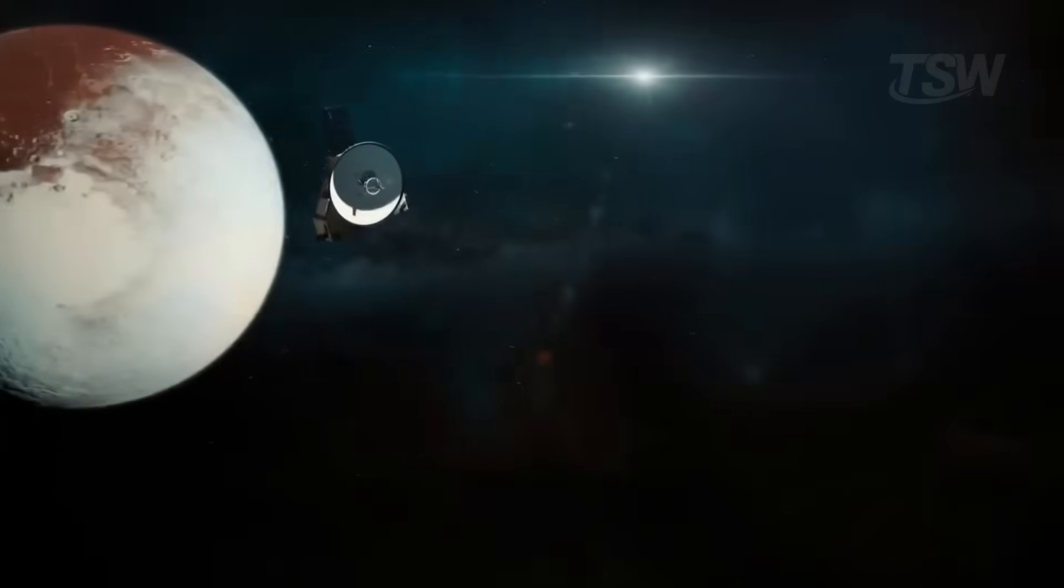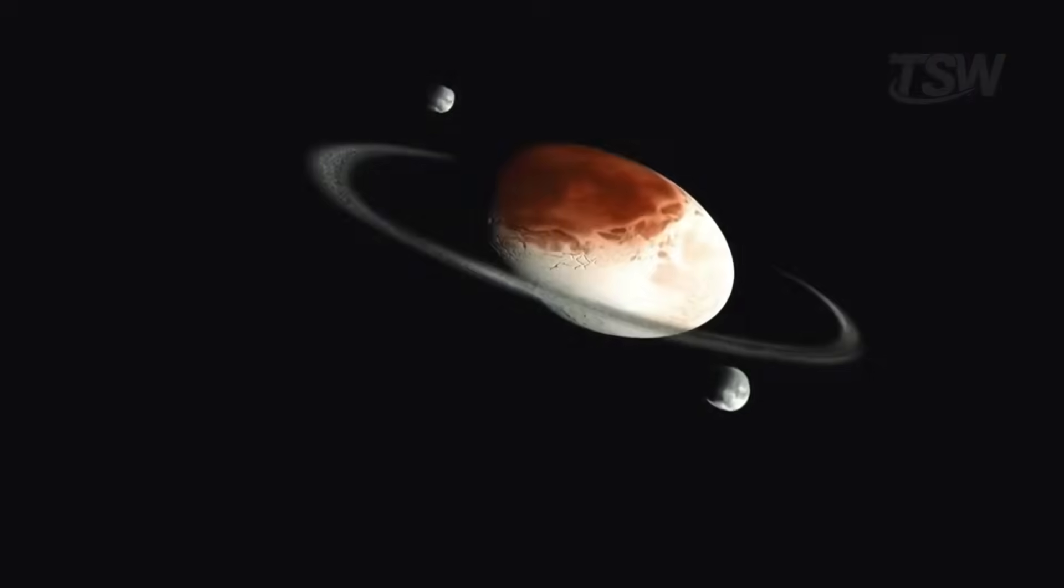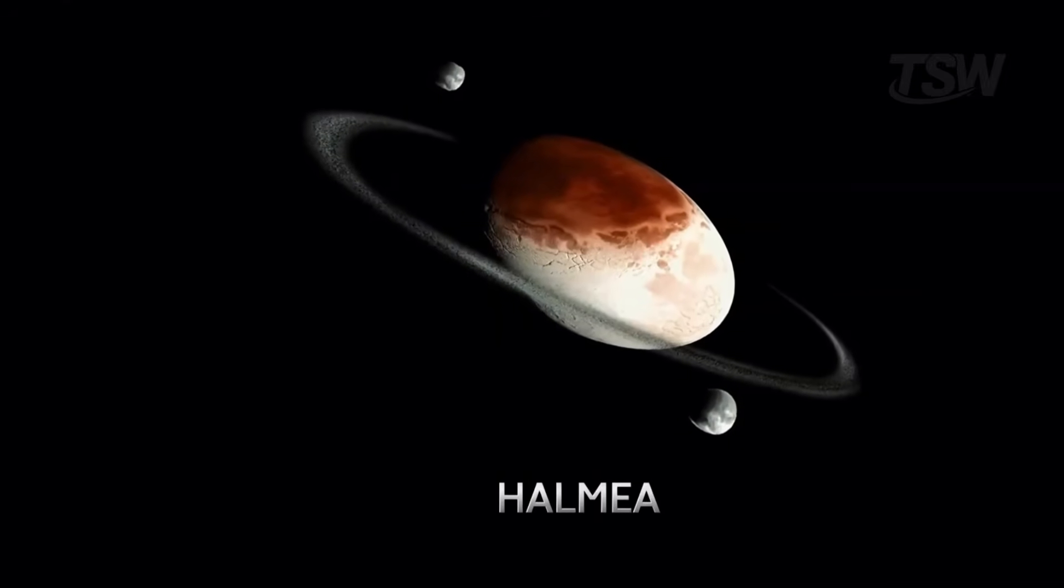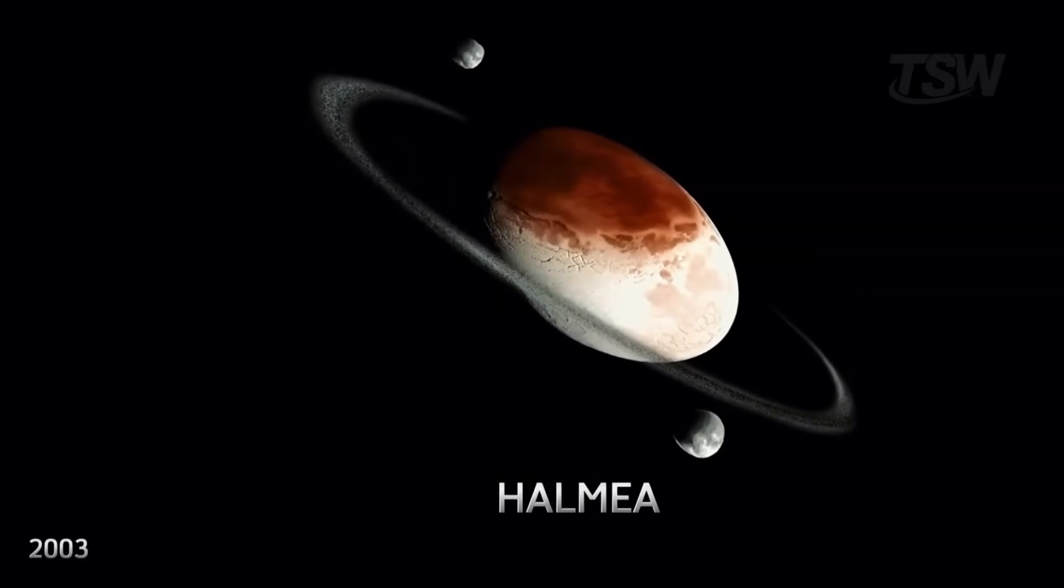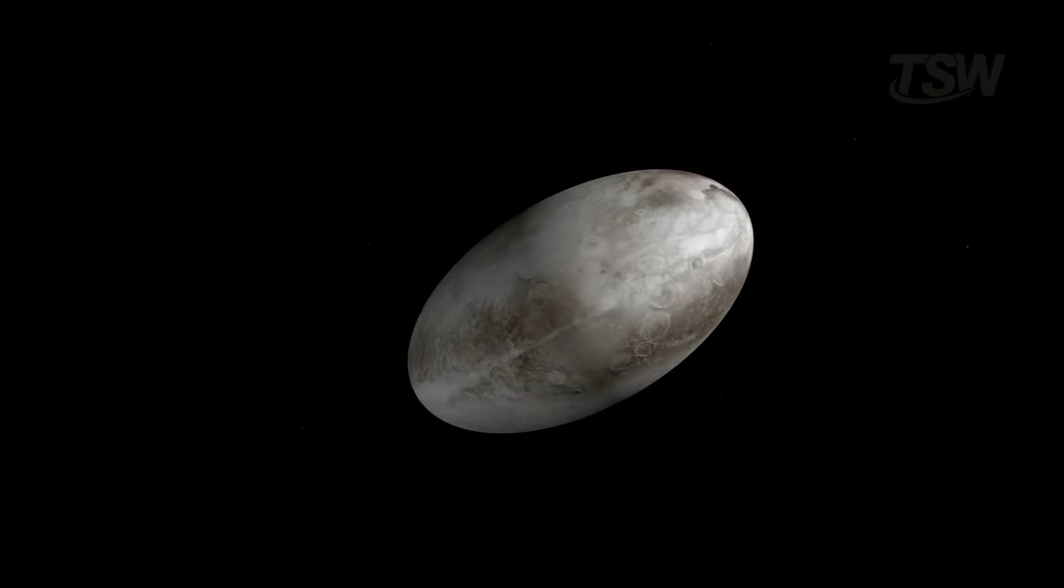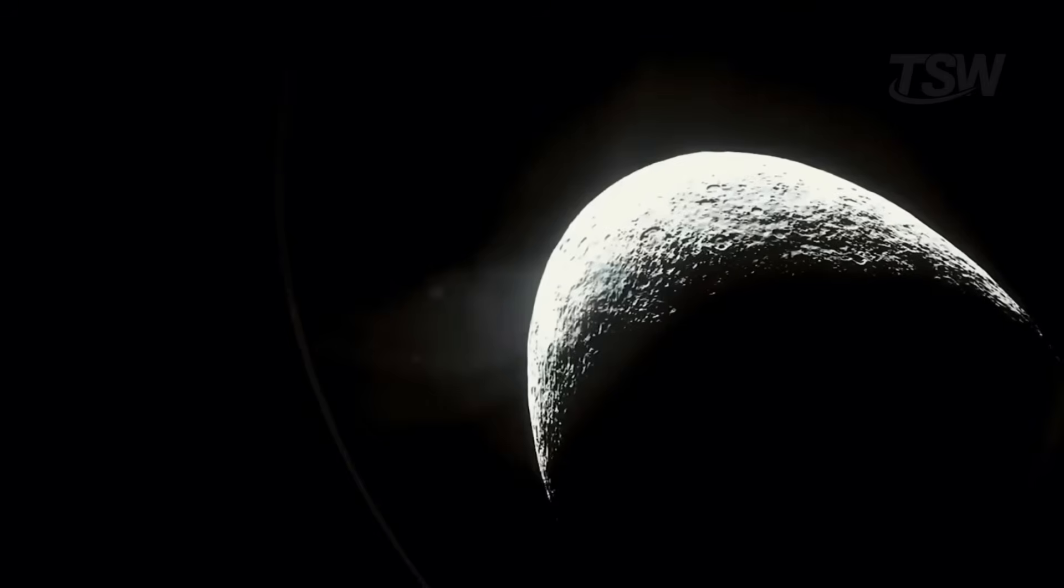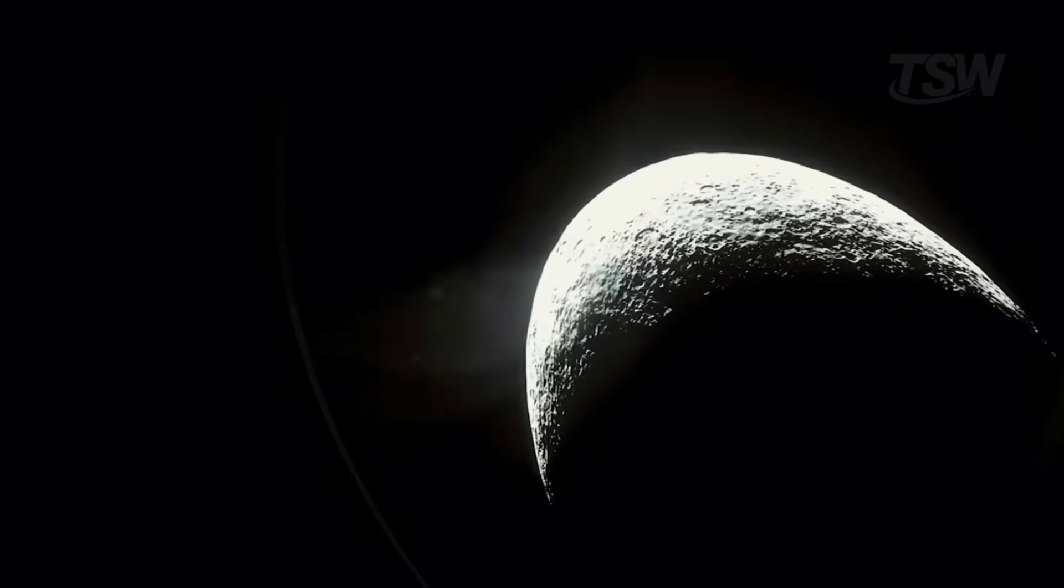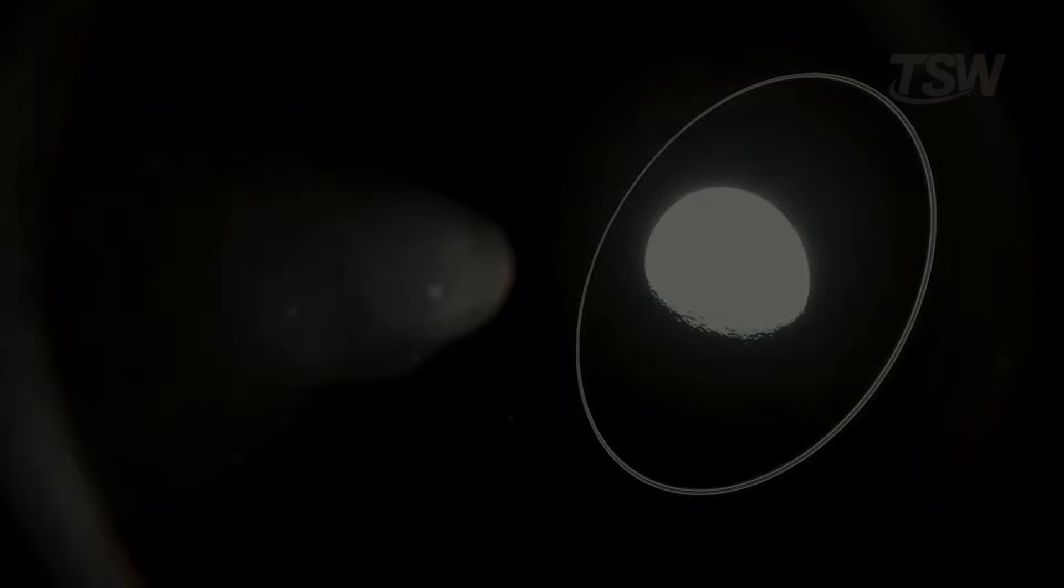One of the first dwarf planets to challenge our traditional view of the solar system was Haumea, discovered in 2003. What's most impressive is its shape. It spins so fast that it ended up stretched, almost like an elongated egg. Its day lasts only four hours, one of the shortest among solar system bodies, likely due to an ancient collision.